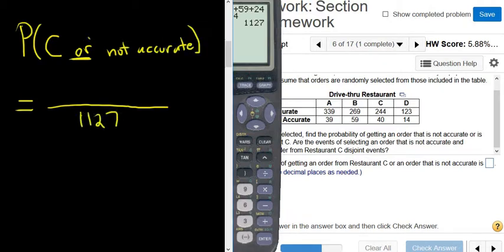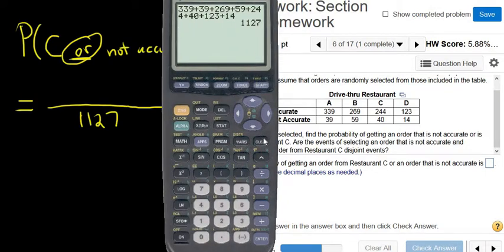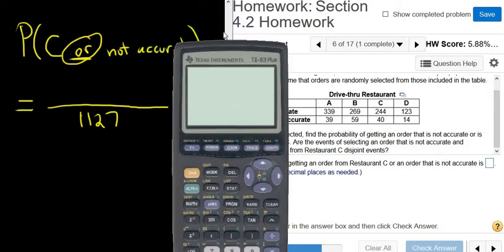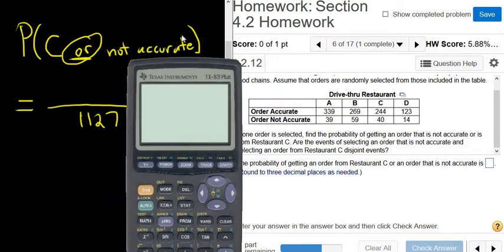And because there's an or and a table, you want to circle and add. And that will give you the numbers that go up top.